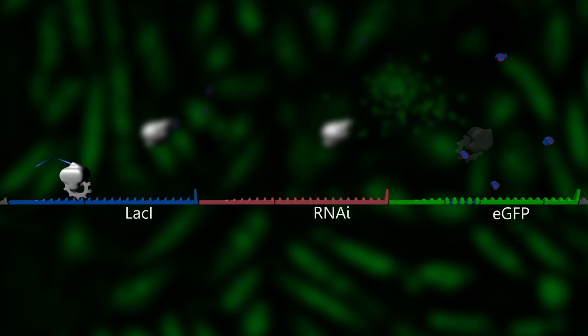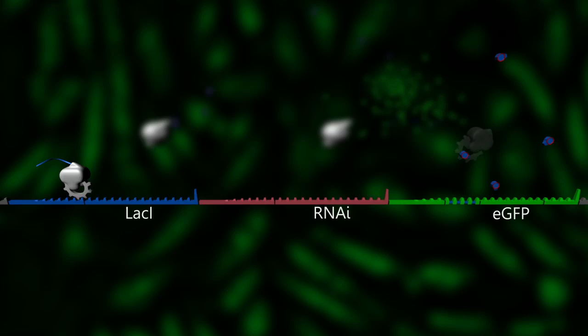To reduce leakiness, an RNAi module was inserted into the switch. This module produces short hairpin RNA, or shRNA.